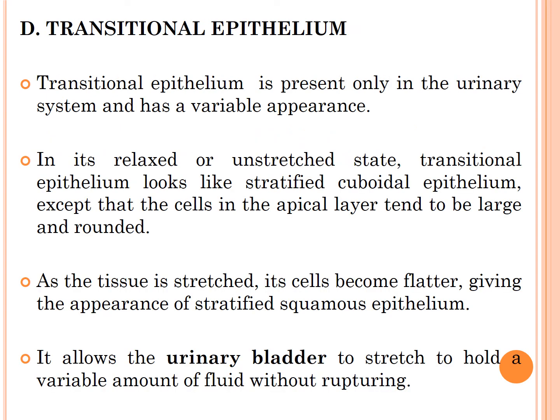The last type of stratified epithelium is transitional epithelium, which is present only in the urinary system. It has a variable appearance because the cells change shape according to their condition. In a relaxed, unstretched state, it looks like stratified cuboidal epithelium except the cells in the apical layer tend to be large and rounded. When stretched, the cells become flat, giving the appearance of stratified squamous epithelium. This allows the urinary bladder to stretch and hold a variable amount of fluid without rupturing.